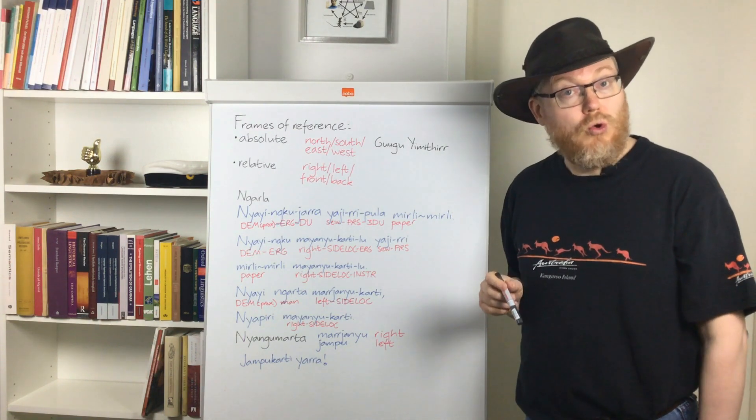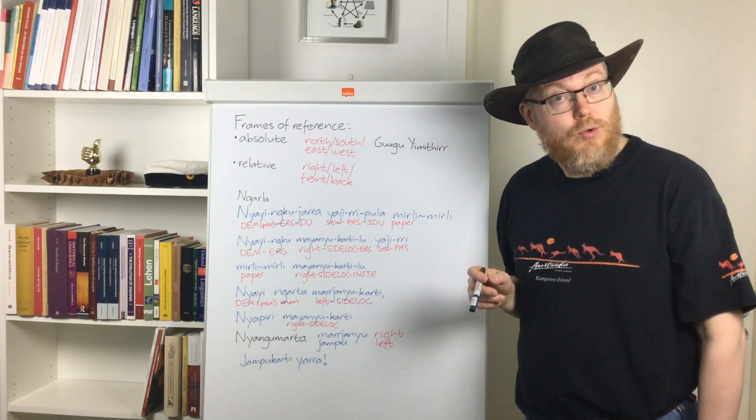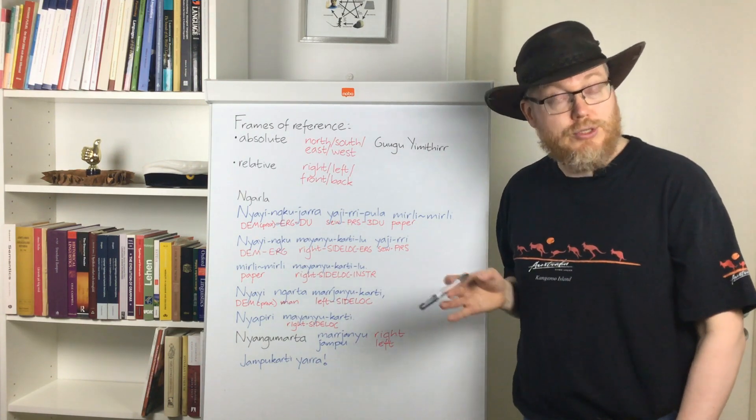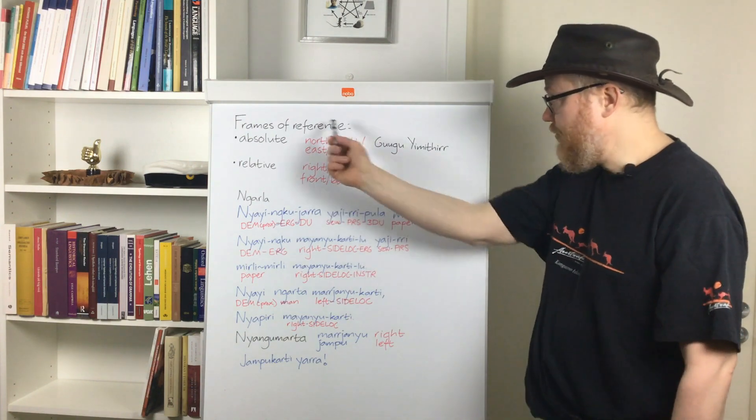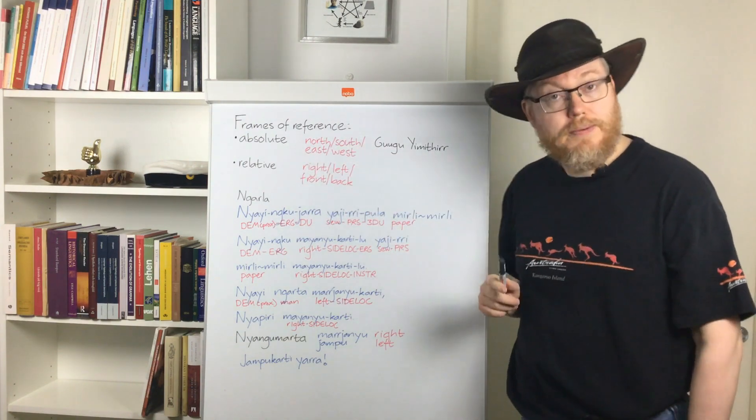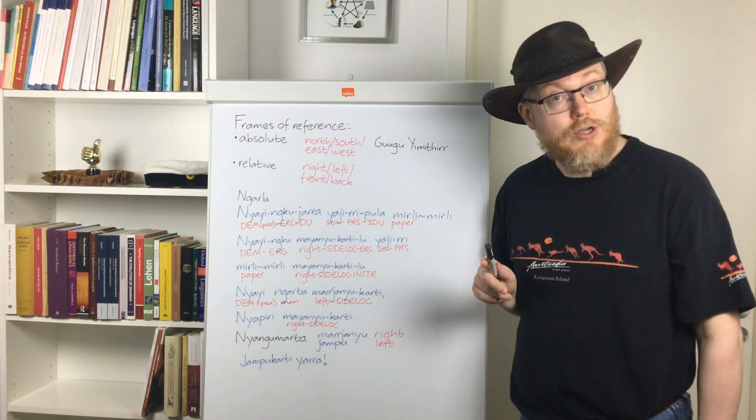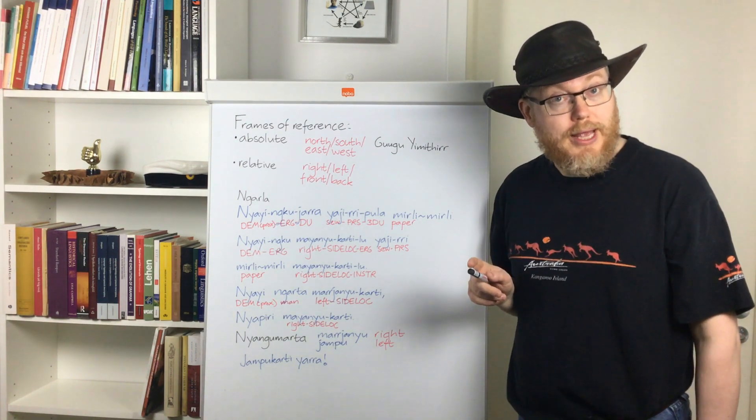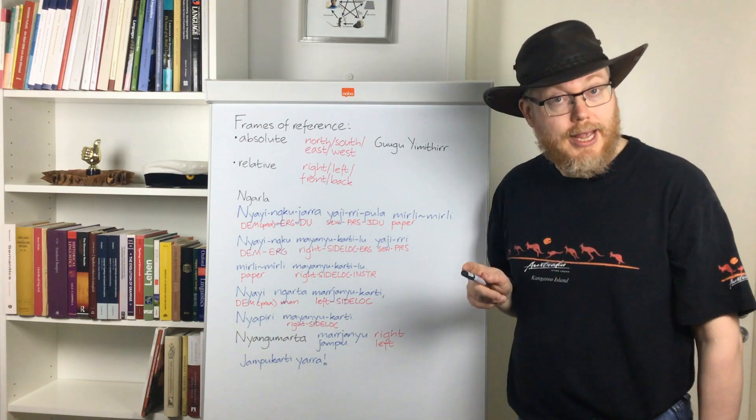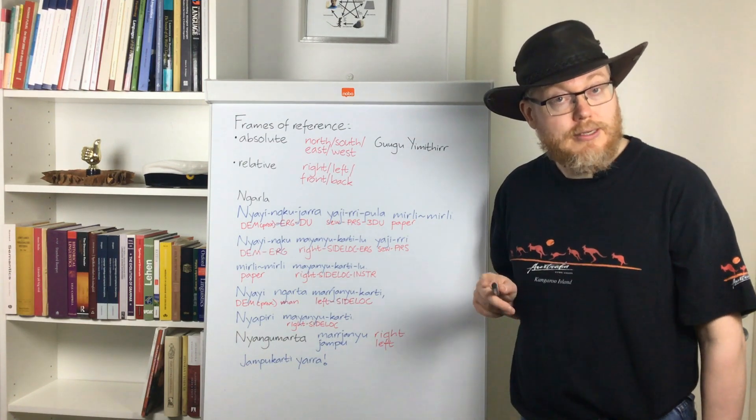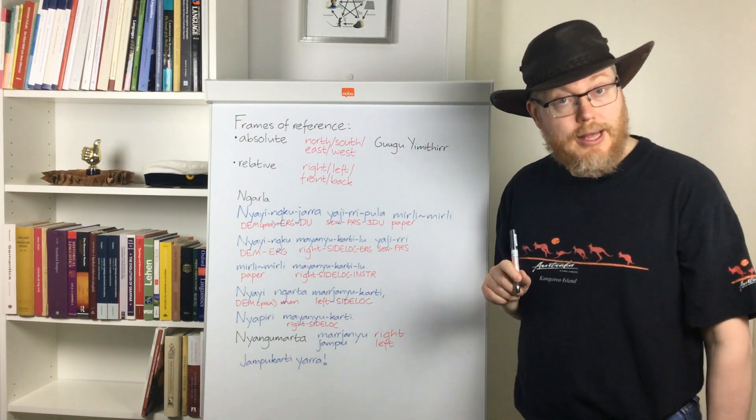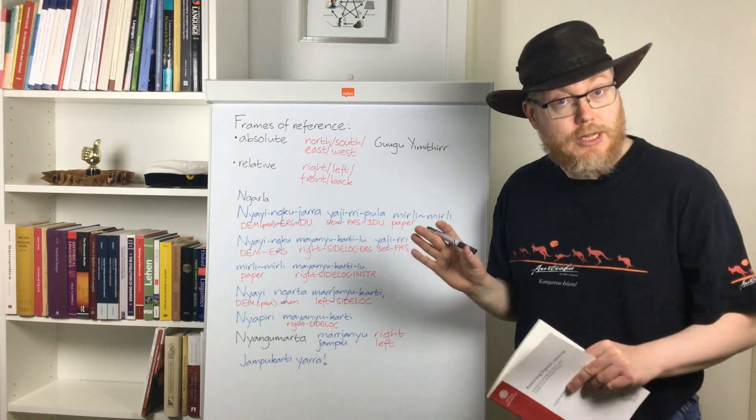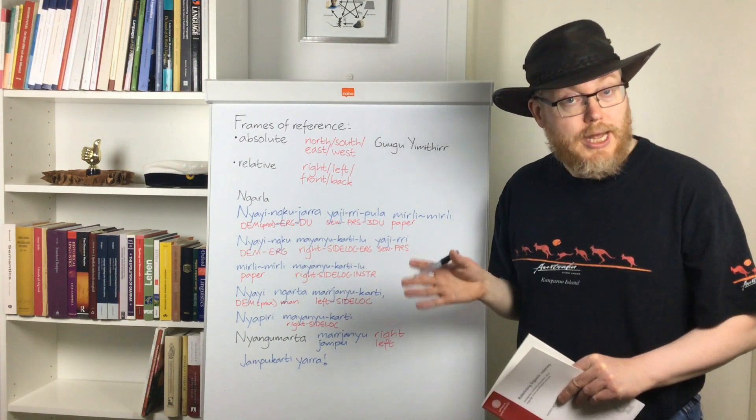So in Kugu Jimittir when talking about where something is in relation to something else you have to use these words. And as it so happens the speakers of this language are famous for being really good at telling where north is, where south is and so on, even if it's cloudy and the sun is not out or the moon and stars at night.